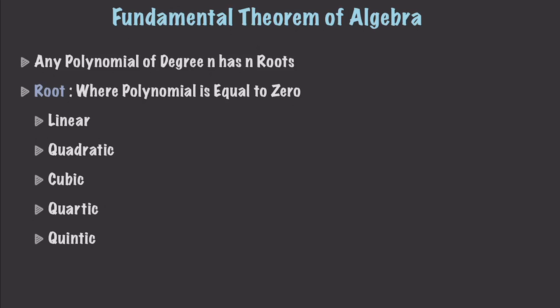So let's review. A linear polynomial would be something like x plus 10 — one exponent. Then a quadratic would be x squared plus 10. And a cubic, x to the third plus 10, and so forth.